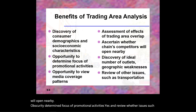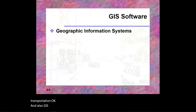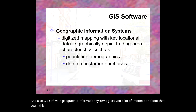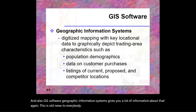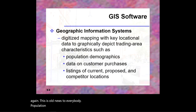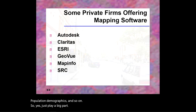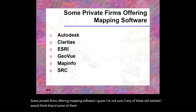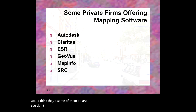GIS — Geographic Information Systems — software gives you a lot of information about population demographics, which is important. Some private firms also offer mapping software for trading area analysis, though tools like Waze and Google Maps are more common today.